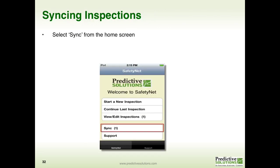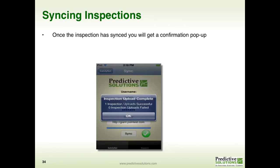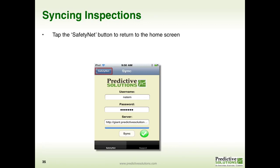Finally, let's talk about synchronizing our inspections. From the home screen, select Sync. This will present you with a screen that will already have your username, password, and server stored, so all you need to do is select Sync. Once your synchronization has been completed, you will be presented with a pop-up screen confirming that the inspection was successfully uploaded. Click OK to that pop-up and you will be back to your synchronization screen. You can then select Safety Net to get back to your home screen.